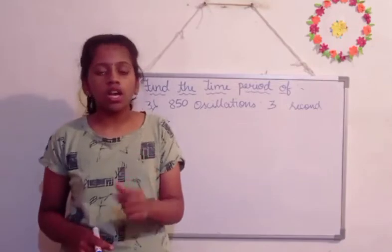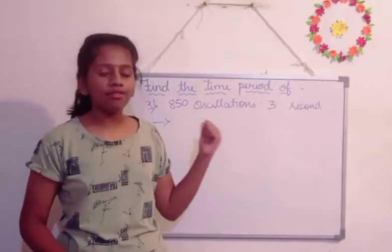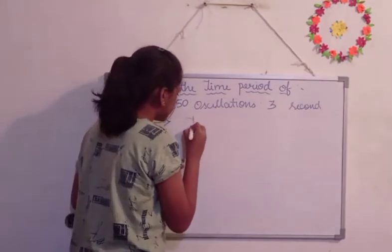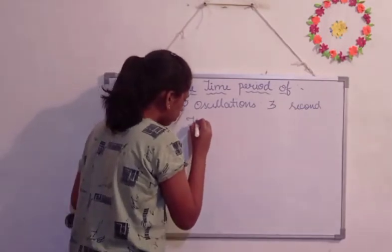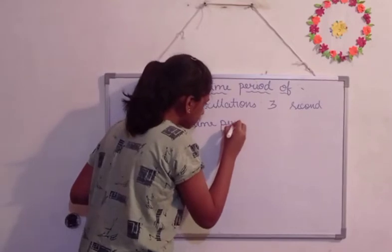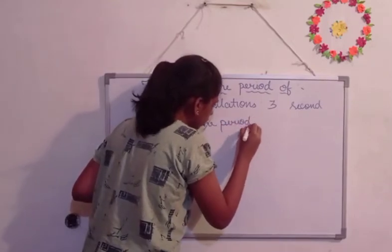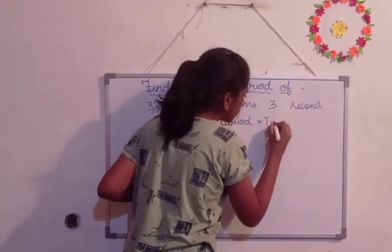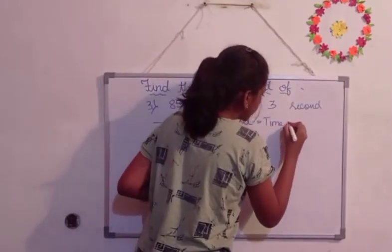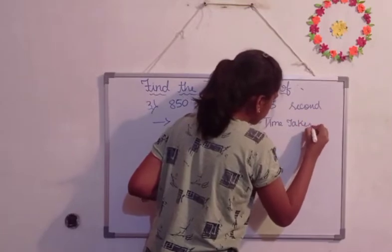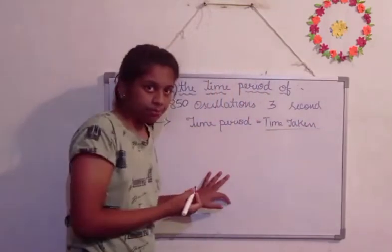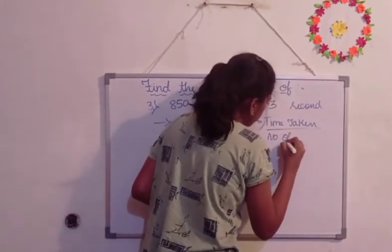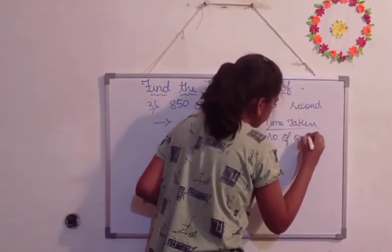So for one oscillation, how much time is required? Now let's find out. First, we are going to write: time period is equal to time taken divided by number of oscillations.